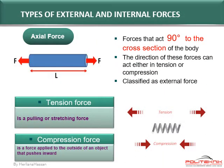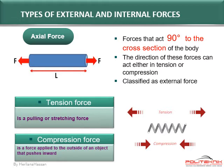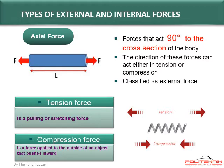Now, let's go further on the first type of external and internal forces. Axial force is a force that acts 90 degrees to the cross section of the body. The direction of these forces can act either in tension or compression. Axial force is classified as the external force. This force consists of tension force, which is a pulling or stretching force that causes the object to elongate, while compression force is applied to the outside of an object that pushes inward and causes the object to shorten its length.